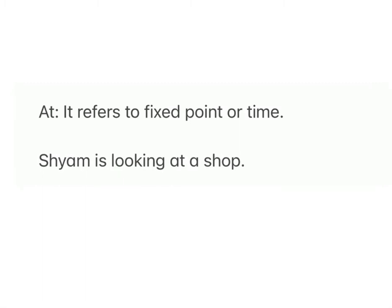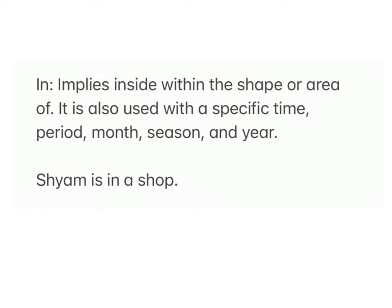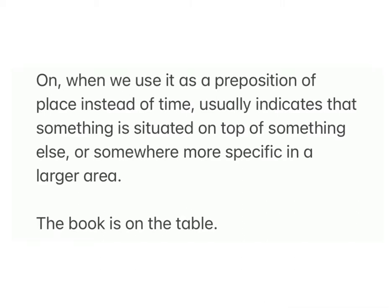'At' refers to a fixed point or time. For example: 'Shyam is looking at a shop.' 'On' when used as a preposition of place (instead of time) usually indicates that something is situated on top of something else, or somewhere more specific in a larger area. For example: 'The book is on the table.' Jab koi ek vastu doosre vastu ke upar rakha hua ho, toh usko batane ke liye 'on' ka upyog hota hai.